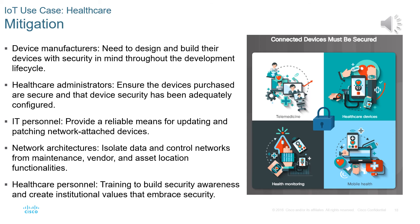The best way to mitigate risk in healthcare IoT is to not put vulnerable devices on the network at all. Device manufacturers must design and build devices with security in mind throughout the development lifecycle. Healthcare administrators must ensure purchased devices are secure and properly configured. IT personnel must provide a reliable means for updating and patching network-attached devices. Network architectures should isolate data and control networks through maintenance, vendor, and asset location functionalities. Finally, all healthcare personnel must undergo training to build security awareness and create institutional values that embrace security in all aspects of healthcare network operation.